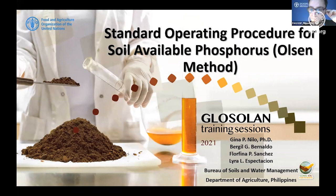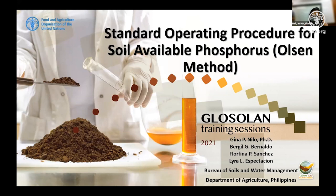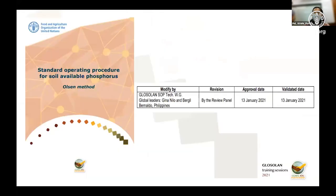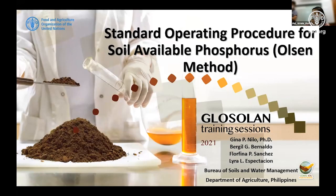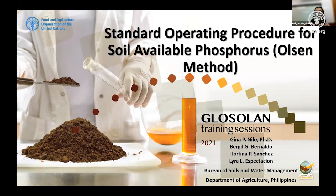Good morning, good afternoon, and good evening to everyone. We are going to discuss the standard operating procedure for soil available phosphorus using the Olsen method. Phosphorus in soil is essential to all forms of life on this planet. It is an important nutrient necessary for the growth and development of plants and animals, on which our food supply depends. Soil phosphorus is found in two forms: organic P and inorganic P, which together make up the total soil phosphorus.